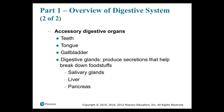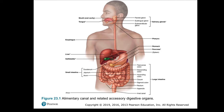Figure 23.1 shows the alimentary canal and related accessory digestive organs. Food enters the mouth or oral cavity, where there is the tongue and secretions from the salivary glands — the parotid gland, sublingual gland, and submandibular gland — that empty their contents into the mouth. Then from there is the pharynx — the back of the mouth — and the long esophagus that brings food into the stomach. From the stomach, we have the three components of the small intestine: the duodenum, jejunum, and ileum.